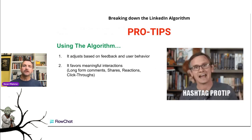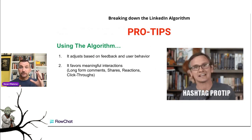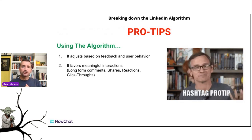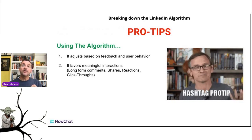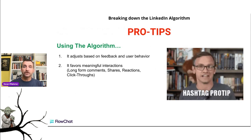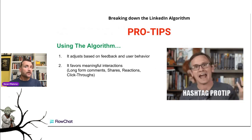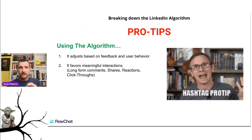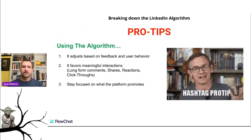Second, the algorithm favors meaningful interactions. Make long-form comments — write a little paragraph, three to five sentences, or even drop a picture. Shares of other people's posts are important, and reactions always help. LinkedIn also looks at click-throughs: if somebody drops a link and you click through to read an article or visit a website, LinkedIn registers that as meaningful engagement and improves that person's algorithm score.